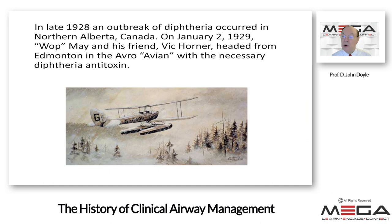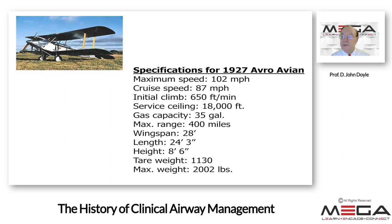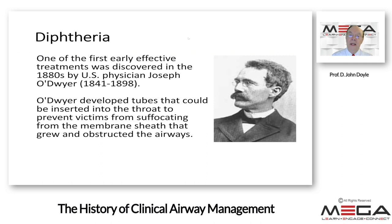Later, in late 1928, an outbreak of diphtheria occurred in northern Alberta, Canada. In January 1929, two individuals headed to Edmonton in the Avro Avian aircraft with the necessary diphtheria antitoxin. Their flight path took them to Mclennon for the night, then to Peace River for refueling, and north to Fort Vermilion. Despite dangerously frigid weather and engine problems, the two pilots arrived safely with the antitoxin and returned three days later to a cheering crowd of 10,000 people. This open-cockpit aircraft had a maximum speed of 102 miles per hour and a limited range of only 400 miles.